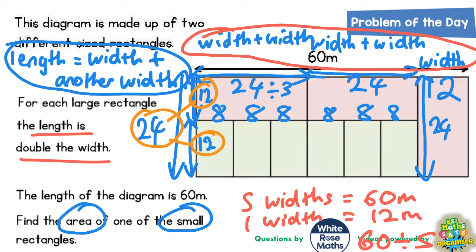So we're almost ready to find our final answer. It says find the area of one of the small rectangles. Well the small rectangles are 12 long and 8 wide. So it is going to be 12 multiplied by 8, length times width, 12 times 8 is 96. So it's going to be 96 metres squared. Final answer, 96 metres squared.